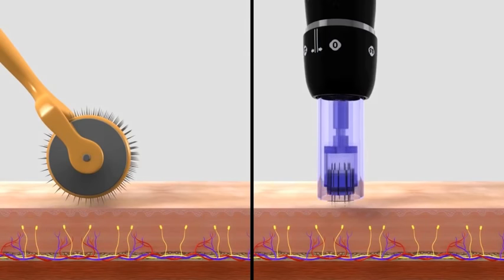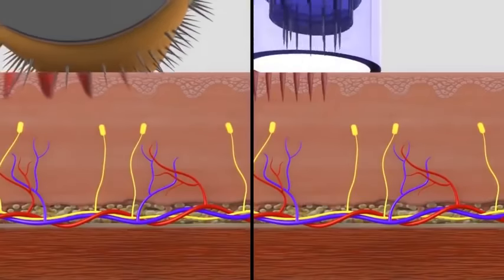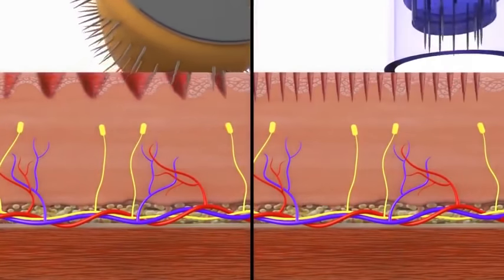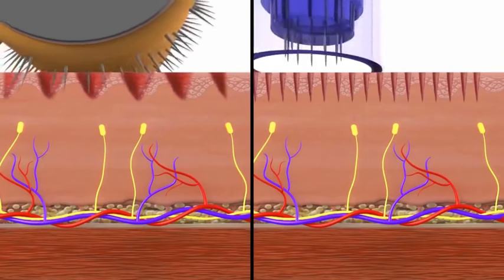Dermapen's multiple needles vertically stamp the epidermis, penetrating all skin types, textures and pigments without the risk of bending, breaking or causing more epidermal damage.